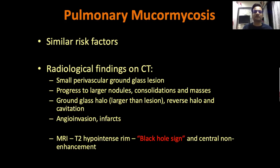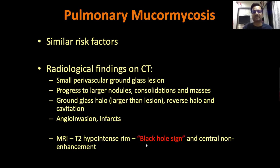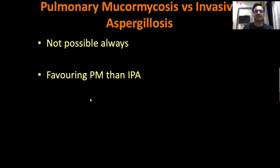The reverse halo can be present in COVID-19, and we know it can be present in other fungal infections like aspergillosis, but so far it has been proven to be most commonly associated with pulmonary mucormycosis. So if you see a reverse ground glass halo, your antenna should really go up. Of course, if there is cavitation, it is also likely to be mucormycosis. There will also be findings of angioinvasion and infarcts, just as we saw in the cerebrum. On MRI, there is a sign called the T2 hyperintense rim or black hole sign, with a central non-enhancing area, that can specifically suggest mucormycosis.